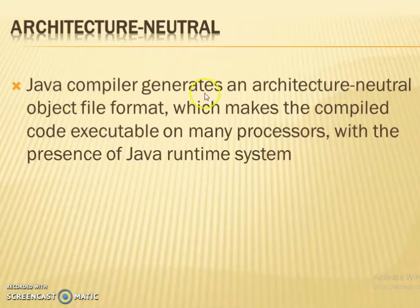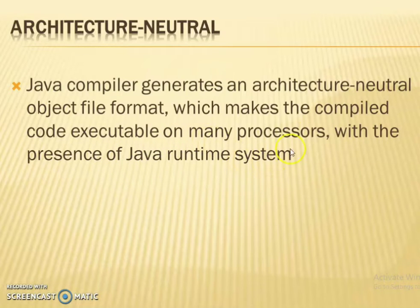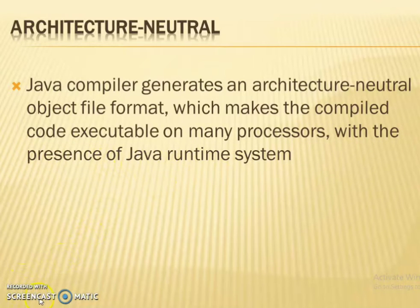Architecture Neutral: Java compiler generates an architecture-neutral object file format, which makes the compiled code executable on many processors with the presence of the Java runtime system.